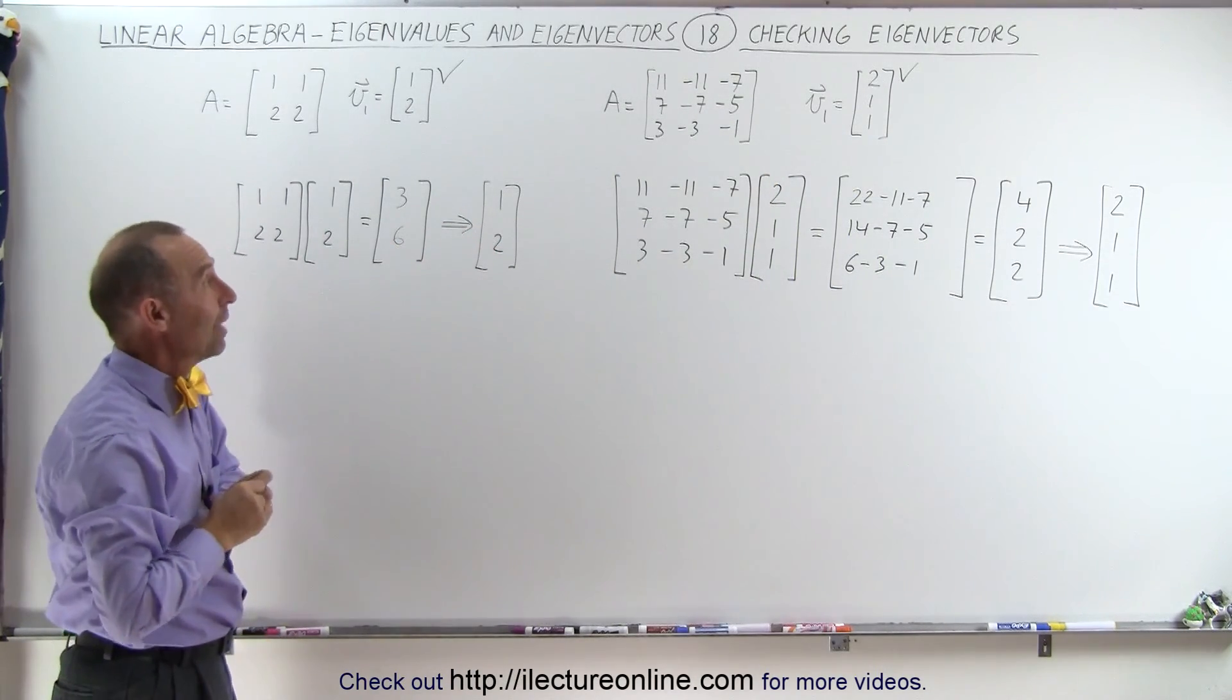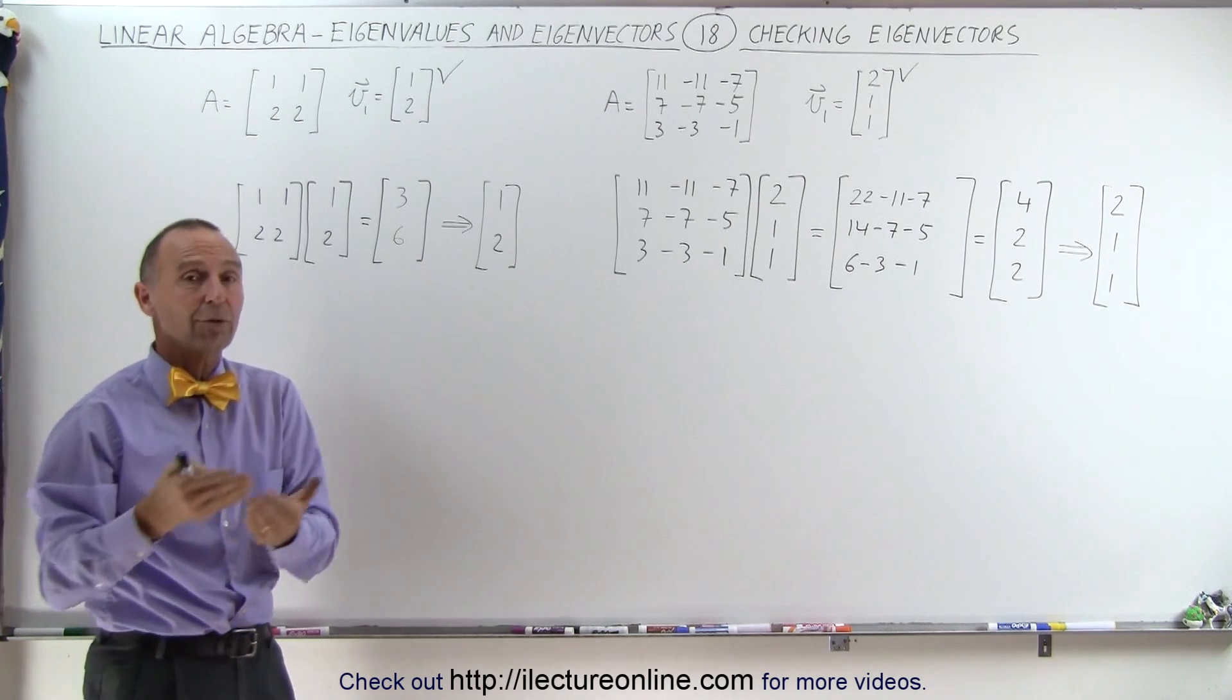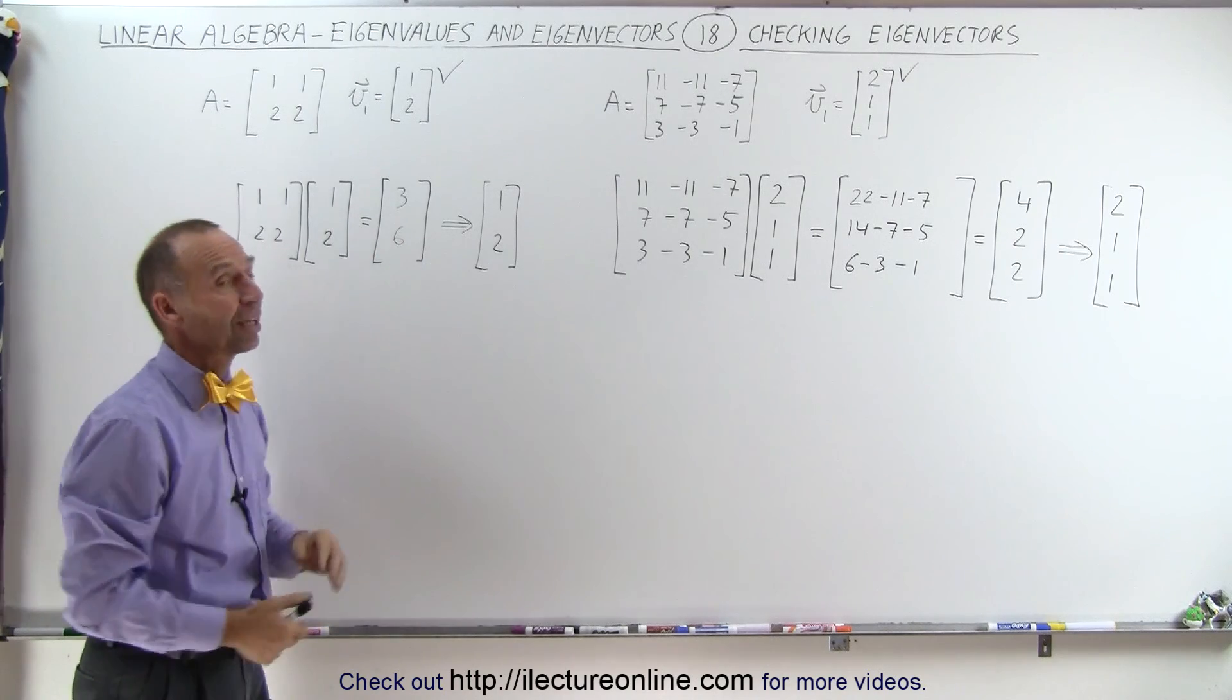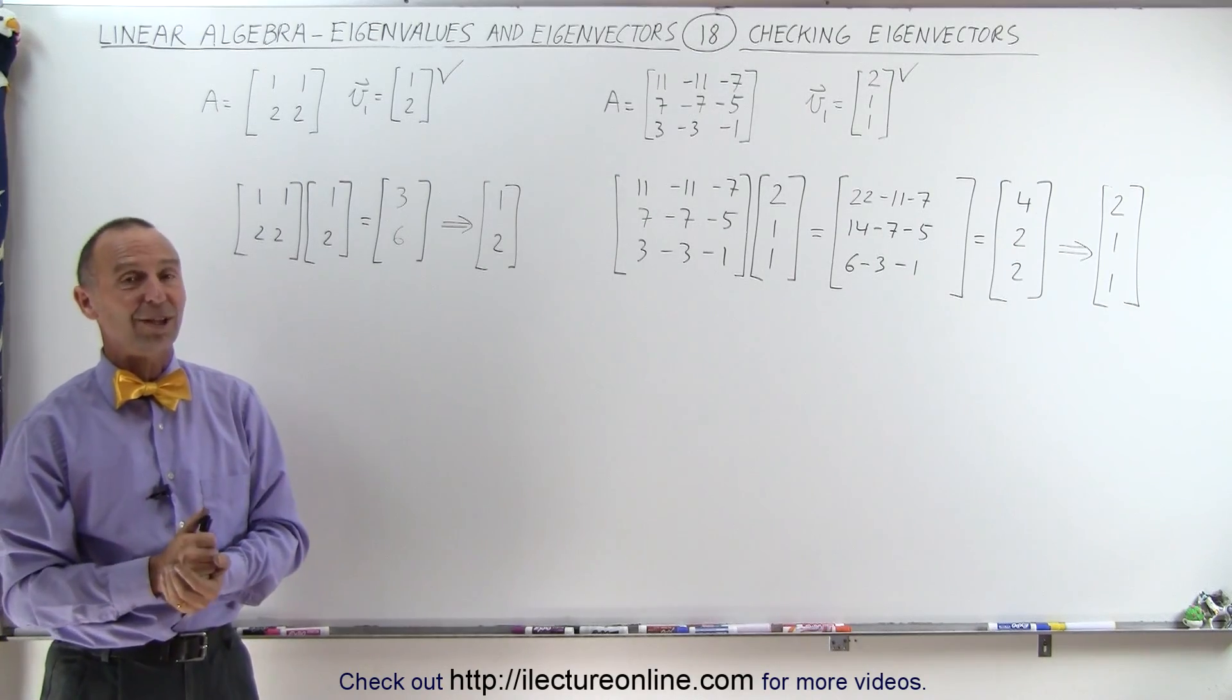That's pretty neat stuff. So now when you have an eigenvector and you're wondering if that is the correct eigenvector for a particular matrix, all you have to do is multiply together and see if you get a ratio that is the same as what you started with. And that's how it's done.